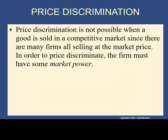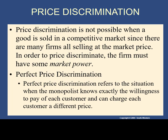Price discrimination is not generally possible in competitive markets because everyone is selling at the same price. But if you have market power — and the monopolist has market power — they can influence the price. The extreme case is perfect price discrimination, where the monopolist knows each customer's maximum willingness to pay and charges exactly that price. The height of the demand curve measures the willingness to pay for each customer.